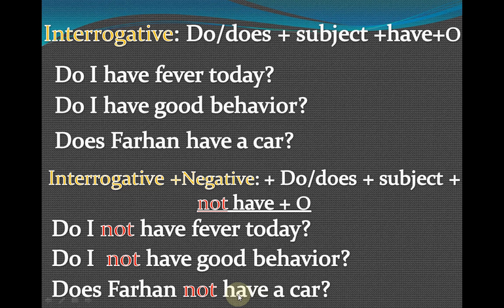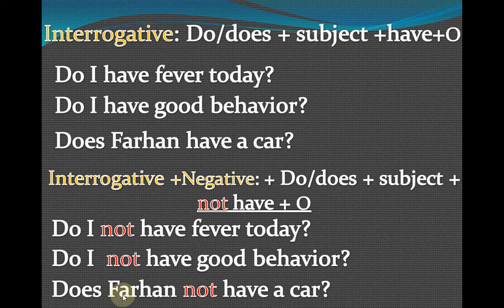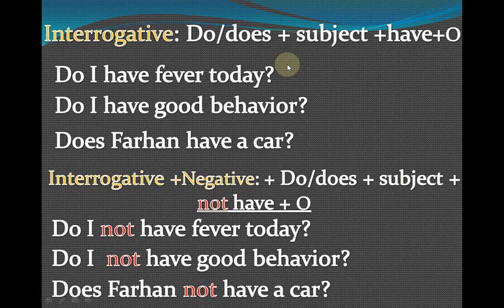'Has' is used only in affirmative sentences with selected subjects: he, she, it, and any singular name. 'Farhan' is a singular name. Affirmative: 'Farhan has a car.' Negative: 'Farhan does not have a car.' Interrogative: 'Does Farhan have a car?' Interrogative plus negative: 'Does Farhan not have a car?' In interrogative and interrogative plus negative sentences, we must put a question mark at the end.